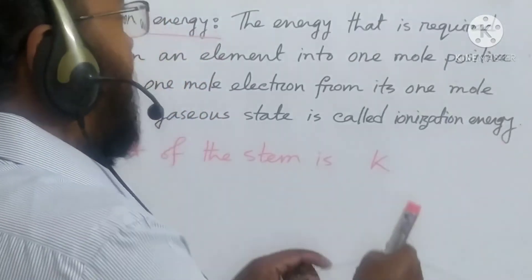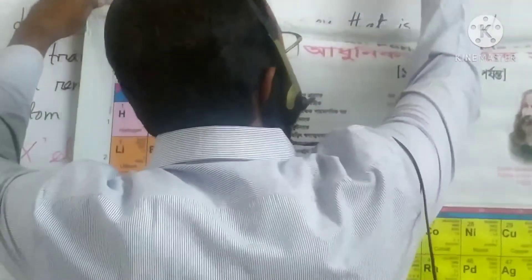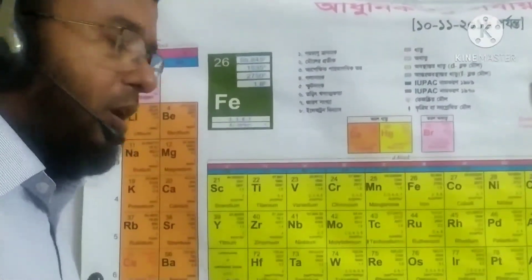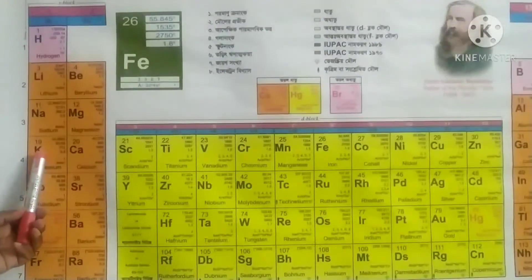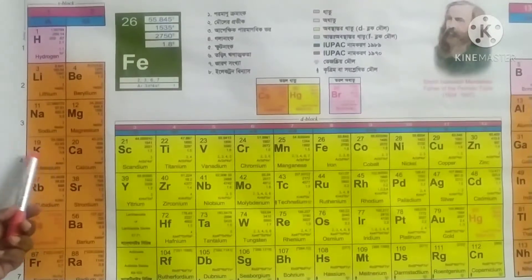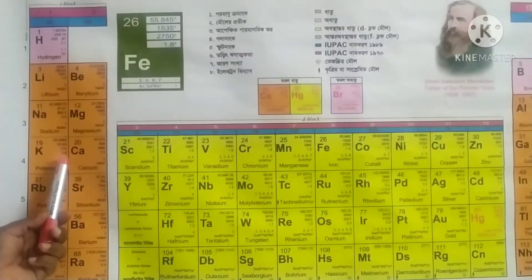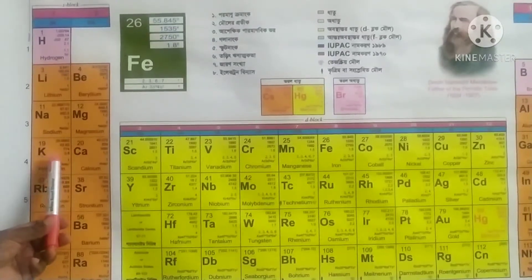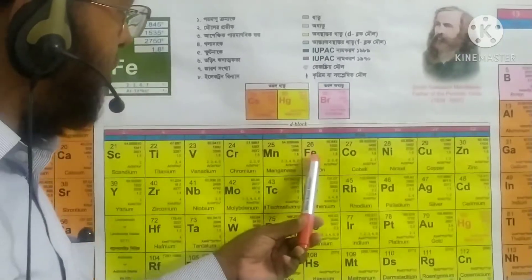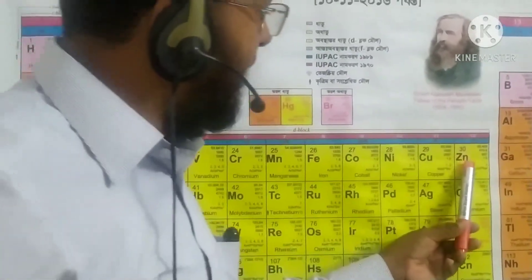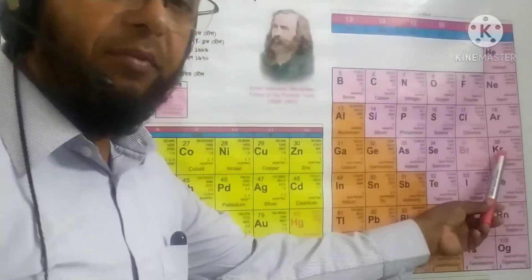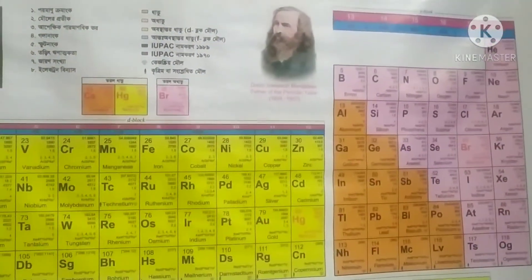In the periodic table, potassium is in the fourth period. In the fourth period, the elements are: potassium, calcium, scandium, titanium, vanadium, chromium, manganese, iron, cobalt, nickel, copper, zinc, gallium, germanium, arsenic, selenium, bromine, and krypton. We have to explain the change of ionization energy in that period.